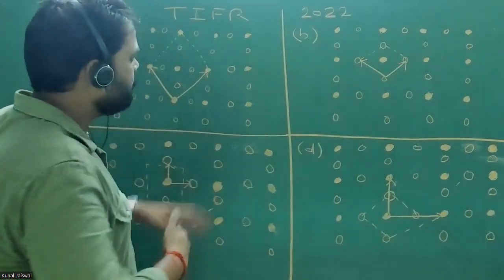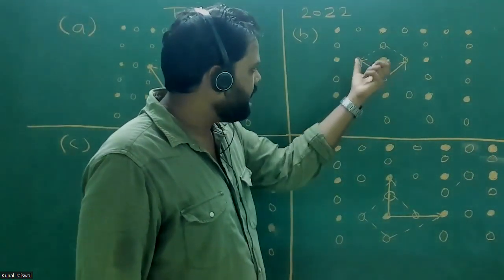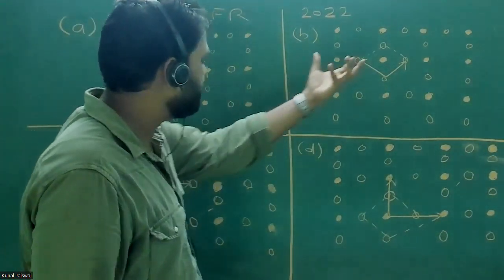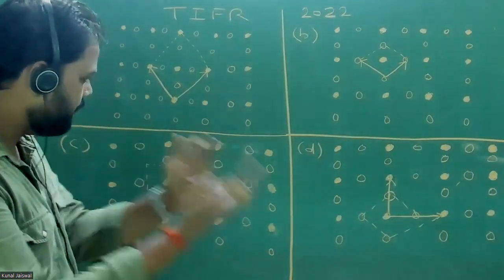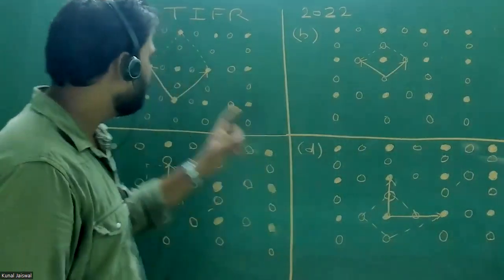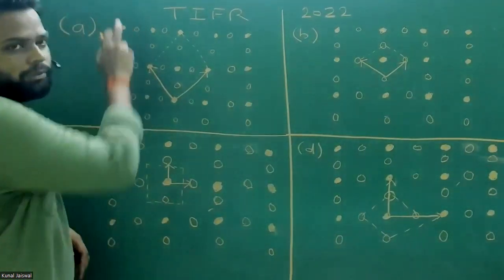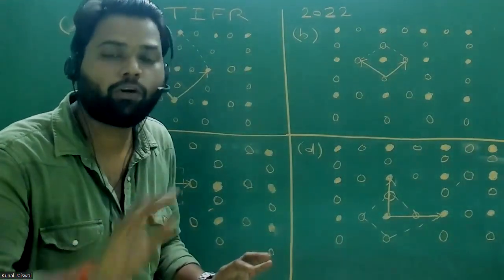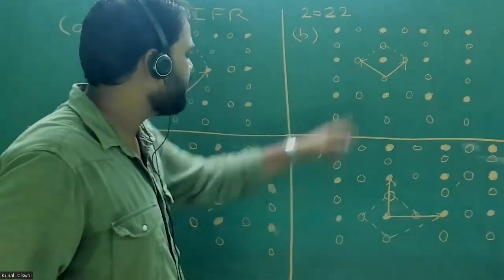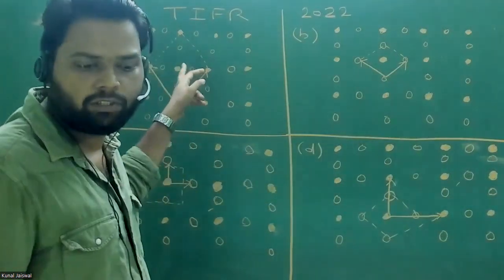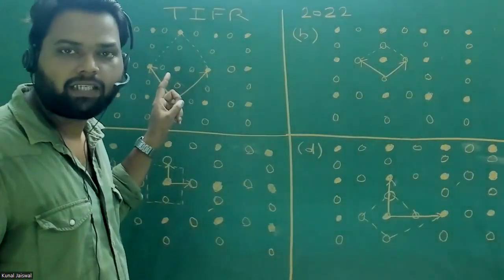We have to see which of the four options, when its lattice vector is repeated, gives the complete lattice without any void left. The first definition says the primitive unit cell has the smallest area, so the first option might be eliminated by students who know this rule — since the other three diagrams appear to have smaller areas. However, the correct option is actually A.